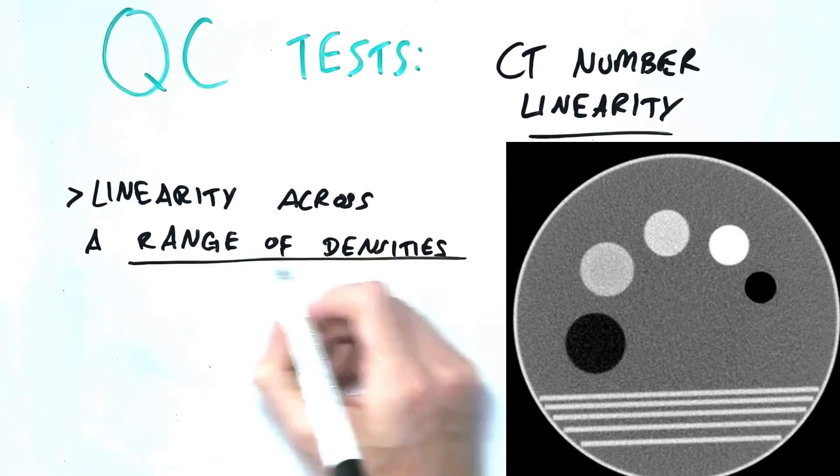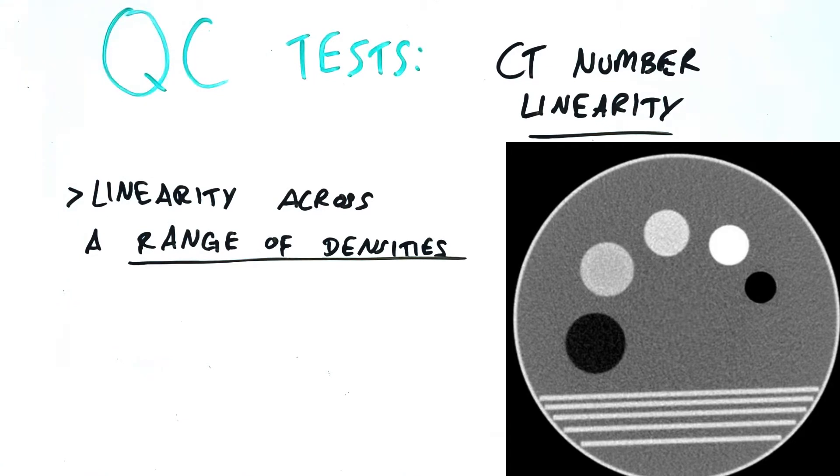That is, if we increase the absorptive properties across different types of tissues in a linear fashion, does the measured Hounsfield units properly respond in a linear fashion? CT number linearity should be tested monthly.